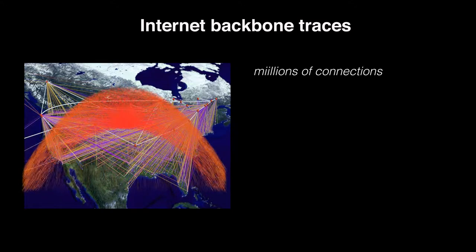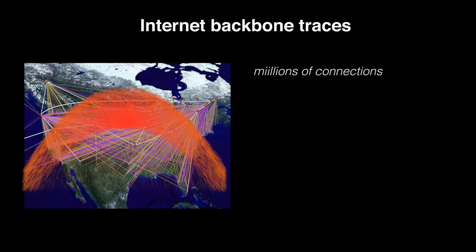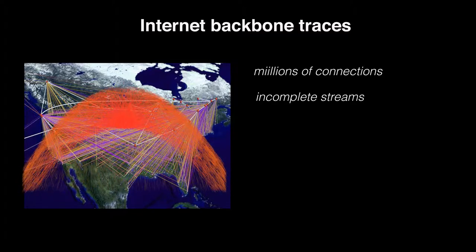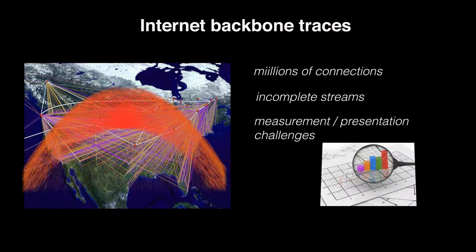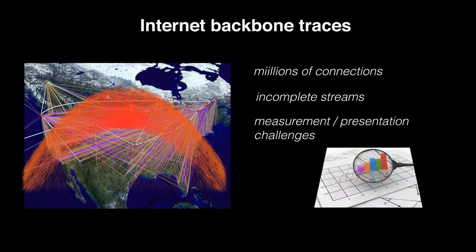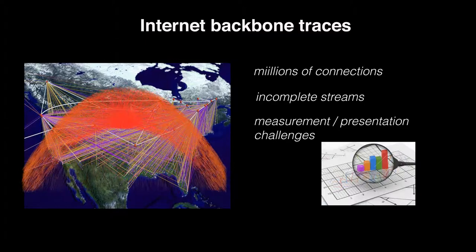But what if we would like to analyze the traffic flowing through a bidirectional internet backbone? That introduces some challenges. Such traffic contains millions of flows and does not always include both directions of the same stream. Even a single direction flow might be incomplete due to packets traveling through different network paths. As a result, measuring the same properties becomes more difficult, and presenting the statistics on millions of streams in a comprehensible way is not an easy task.